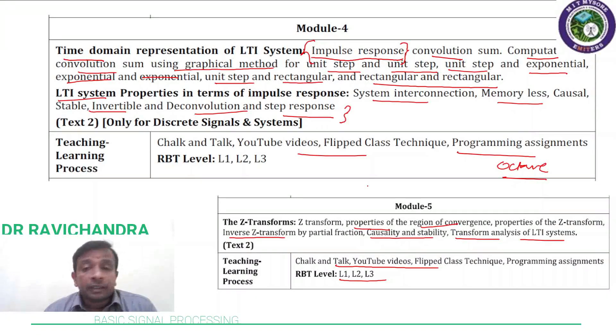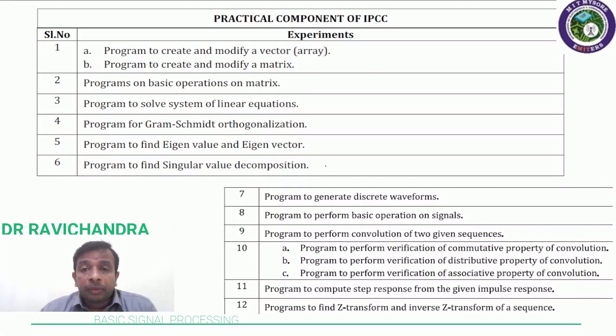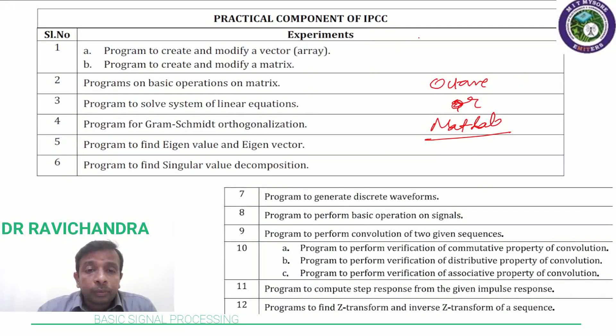As this is an integrated professional core course, we have certain experiments to complete using Octave and MATLAB if required. Generation of discrete waveforms, basic operations and convolutions, commutative property of convolution, different distributive and associative properties are verified using the software tool, along with programs to compute step response from given impulse response and to find z-transforms and inverse z-transform of a sequence.